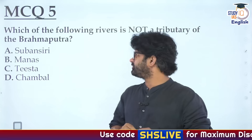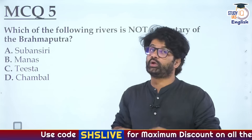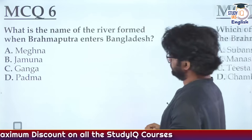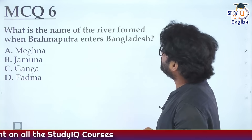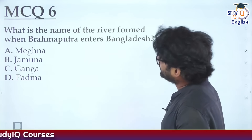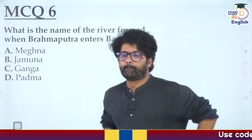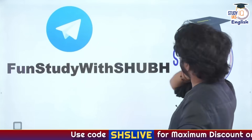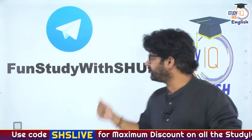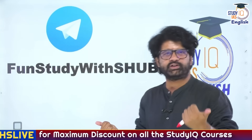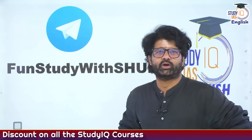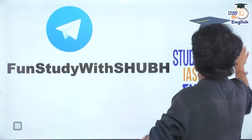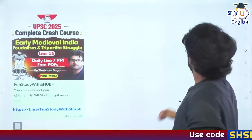MCQ5: Which of the following river is not a tributary of Brahmaputra - Subansiri, Manas, Tista, or Chambal? You can eliminate options by thinking about where these rivers are. MCQ6: What is the name of the river when Brahmaputra enters Bangladesh - Meghna, Jamuna, Ganga, or Padma? If you know the answers to all six MCQs, post them in the comment section. I will share the PDF with answers in my Telegram channel.